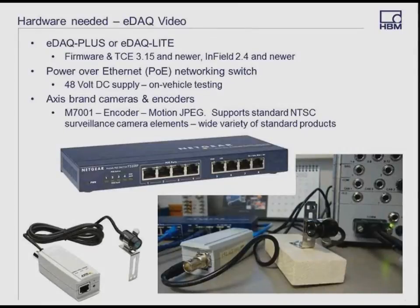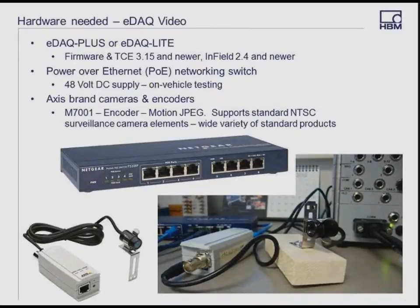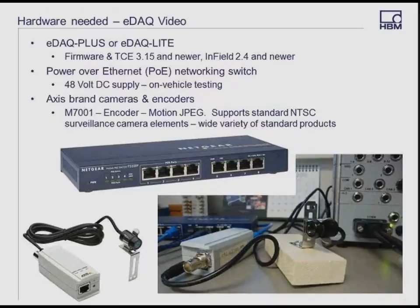We support AXIS brand cameras and video encoders. The test setup we have available for demonstrations is the AXIS M7001, a motion JPEG encoder that sends compressed JPEG information to the EDAC through the existing Ethernet port. The M7001 encoder also supports a standard NTSC video input, so commercial off-the-shelf surveillance camera elements can be used. There's a wide variety of these available for low light and low lux ratings, with IR-illuminated rings for internal machine use. You can also use surveillance equipment that takes multiple camera elements into a MUX and outputs onto a single NTSC feed into the M7001. AXIS branded cameras are the ones we've worked with because they have the motion JPEG feature and allow us to use an API to set them up with our TCE software.